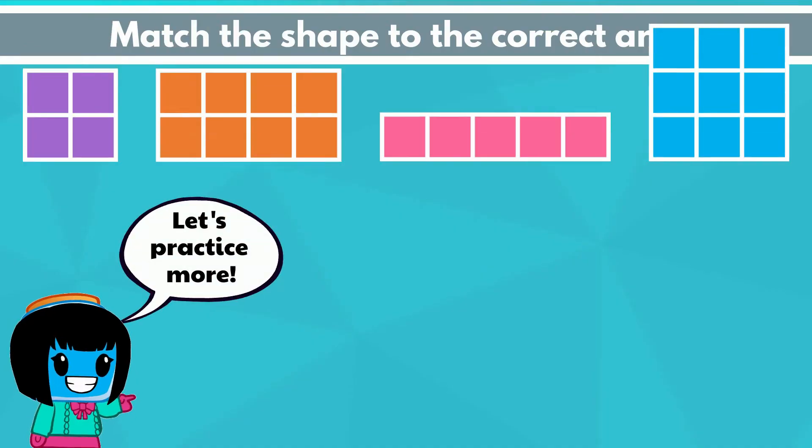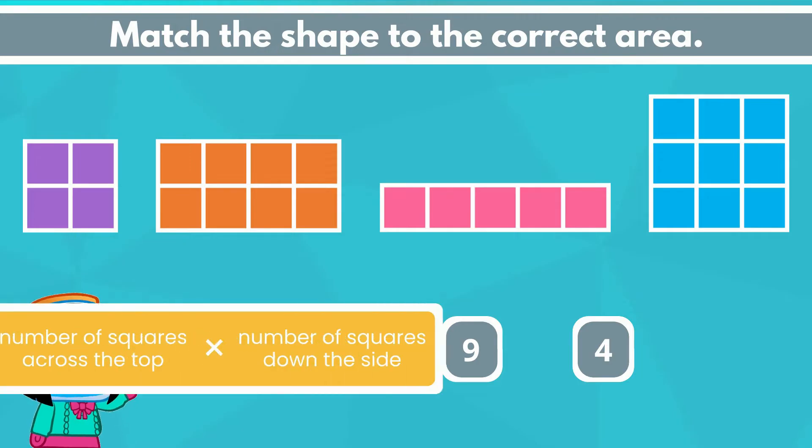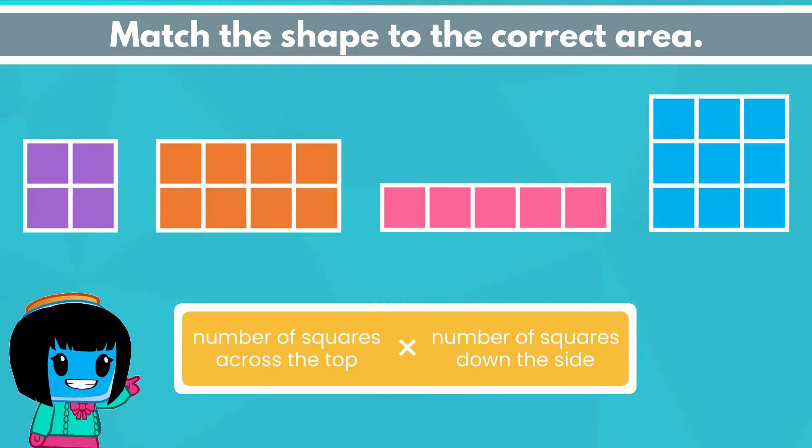Let's practice more by matching the shape to the correct area. Again you'll count the number of unit squares across the top and multiply it by the number of squares down the side to find the area faster.